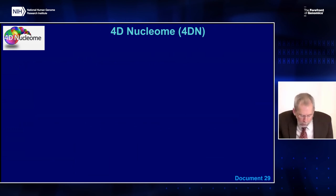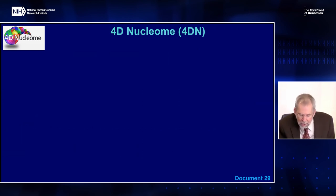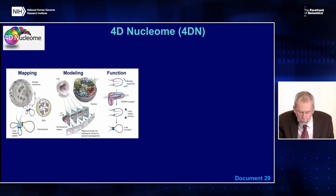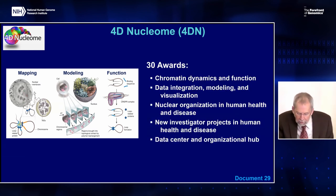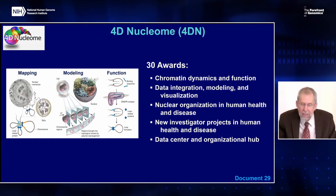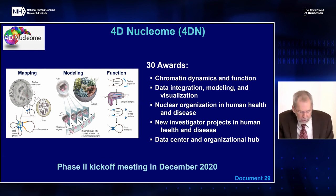The 4D Nucleome, or 4DN, is a NIH Common Fund program whose goal is to study the organization of the nucleus in both space and time. In 2020, the program started its second phase with a focus on understanding the role of nuclear organization in disease and biological processes such as gene expression. The program objectives are mapping, modeling, and function. Last fall, NIH issued 30 awards for the second phase focused on chromatin dynamics and function, data integration, modeling and visualization, nuclear organization and human disease and health, and new investigator projects in human health and disease. 4DN held a phase two kickoff meeting back in December of last year.